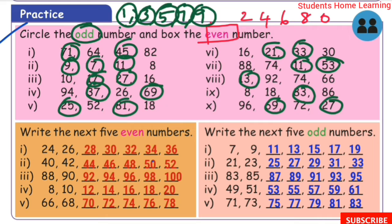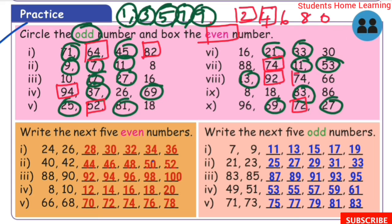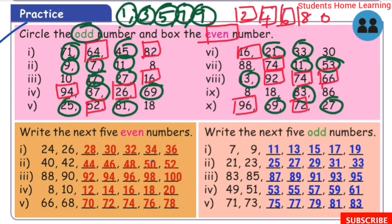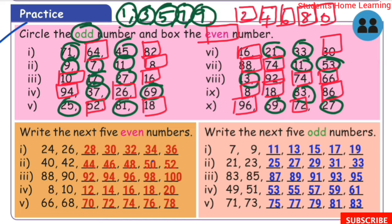For even numbers, the ones place is 2, 4, 6, 8, or 0. Numbers with 2 in the ones place: 82, 52, 92, 72 — even numbers. Numbers with 4 in the ones place: 64, 74, 174 — even numbers. Numbers with 6 in the ones place: 16, 26, 66, 86, 96 — even numbers. Numbers with 8 in the ones place: 8, 18, 88 — even numbers. Numbers with 0 in the ones place: 10, 30 — even numbers.